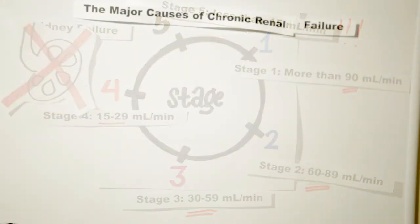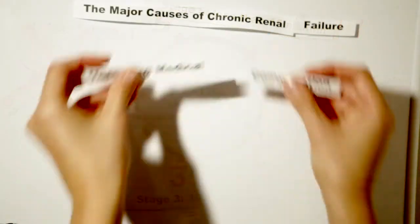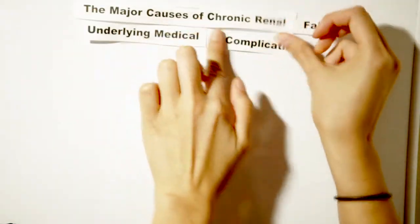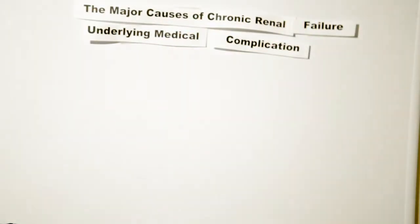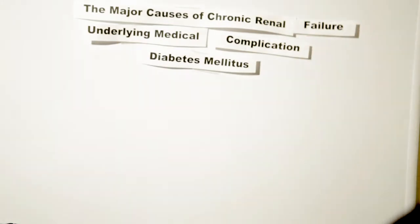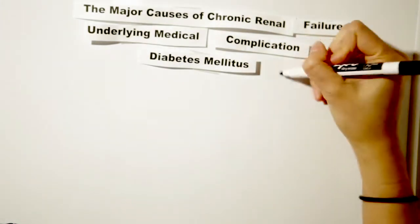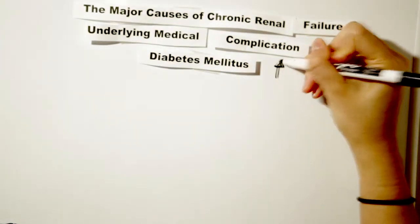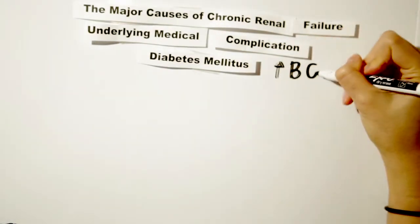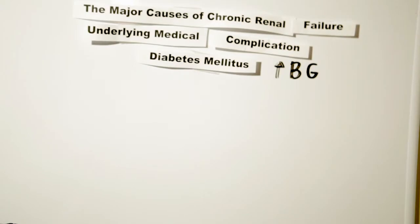Chronic kidney disease is caused by other health complications. One common condition is diabetes mellitus. This is due to sugar building up in the blood and damaging the tiny capillaries in the body and the tiny filters in the kidneys.